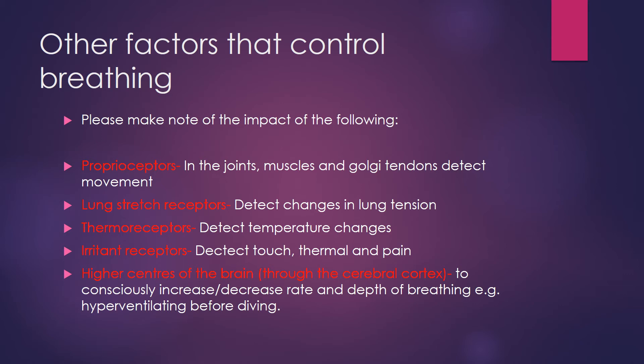Other factors that control breathing include several types of receptors. Proprioceptors, located in the joints, muscles, and Golgi tendons, detect movement and send information back to the RCC at the start of exercise to determine whether to increase breathing rate and depth. Lung stretch receptors detect changes in lung tension as we breathe in more deeply and send that information to the brain. Thermoreceptors, often found in the blood vessels, detect temperature changes and send information back to the RCC to influence breathing rate and depth.